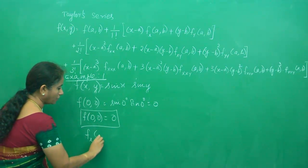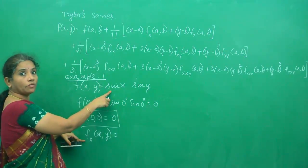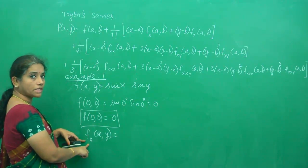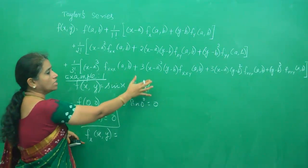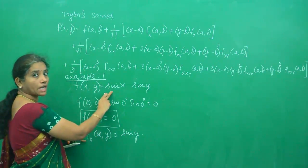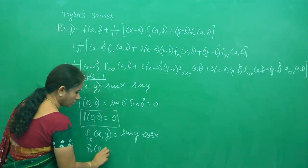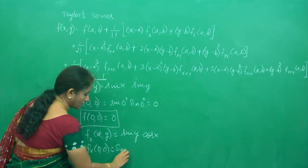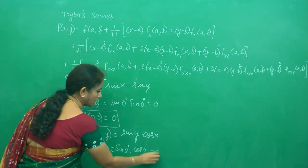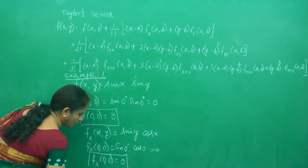Now we are going to find f_x(a,b). Before doing that, I should first find f_x(x,y). What is f_x(x,y)? That is the partial derivative of sin(x)·sin(y) with respect to x. When doing partial derivative with respect to x, y is constant, so sin(y) is considered constant. Write sin(y) first, and the derivative of sin(x) is cos(x). So f_x(x,y) = sin(y)·cos(x). Now f_x(0,0) = sin(0)·cos(0) = 0·1 = 0. Draw a rectangle and keep it ready.